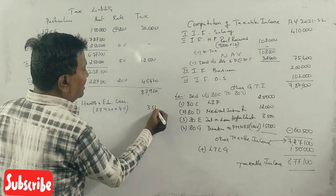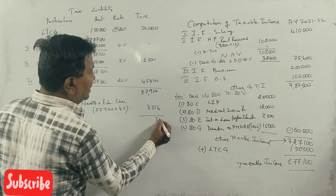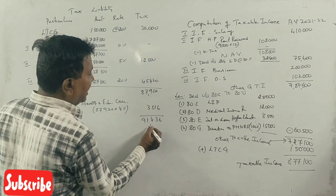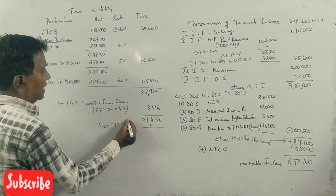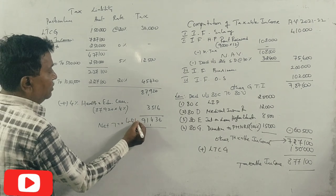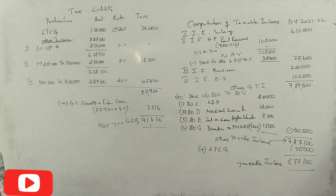Add health and education cess at 4% on 87,920, which is 3,516. The net tax liability is 91,436. Thank you.